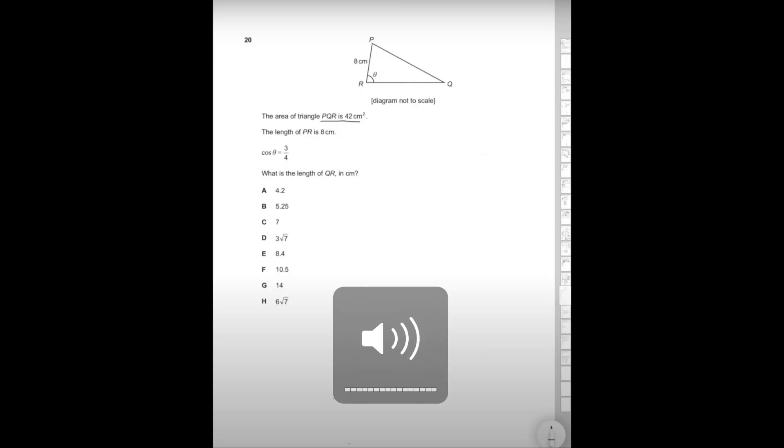Now we're going to go over a worked example from the 2021 paper of a BMAT Maths question. The length of PR is eight centimetres, cos theta is three over four. What is the length of QR in centimetres? Let's call QR x.